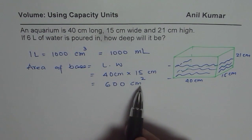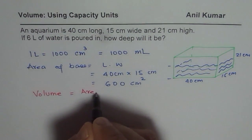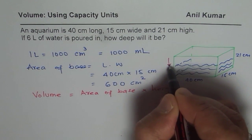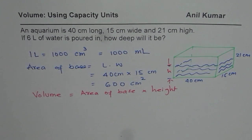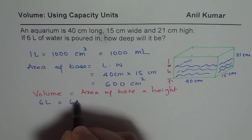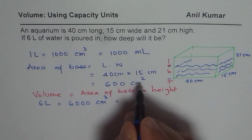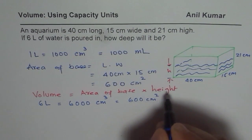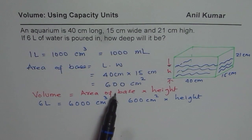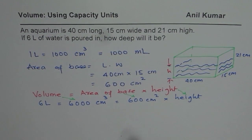Volume is area of the base times height. We are given the volume of water, which is 6 liters — that is 6000 centimeter cube. Area of the base is 600 centimeter square. So we utilized our formula: 6000 centimeter cube equals 600 centimeter square times height. From this formula, we can find what height is.